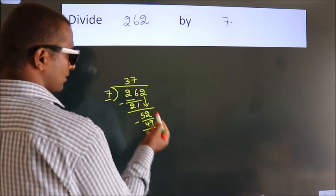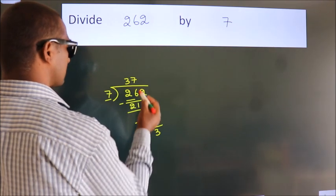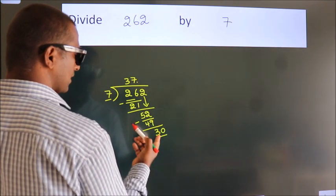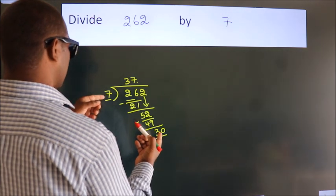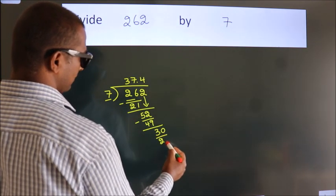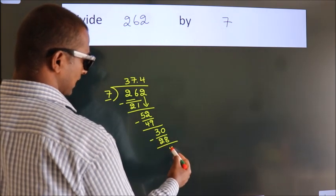After this, no more numbers to bring it down. So, what we should do is we put dot, take 0. So, 30. A number close to 30 in 7 table is 7 fours 28. Now, we subtract. We get 2.